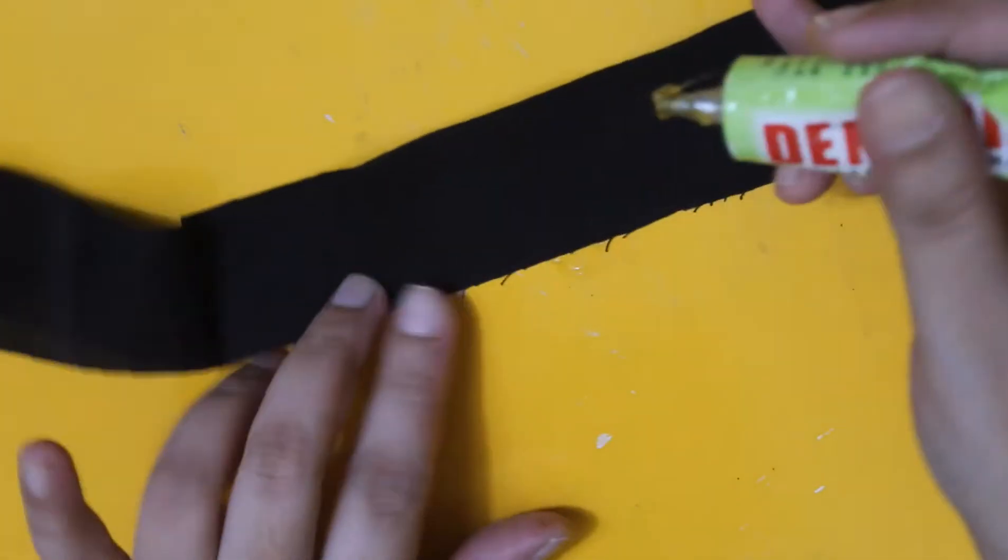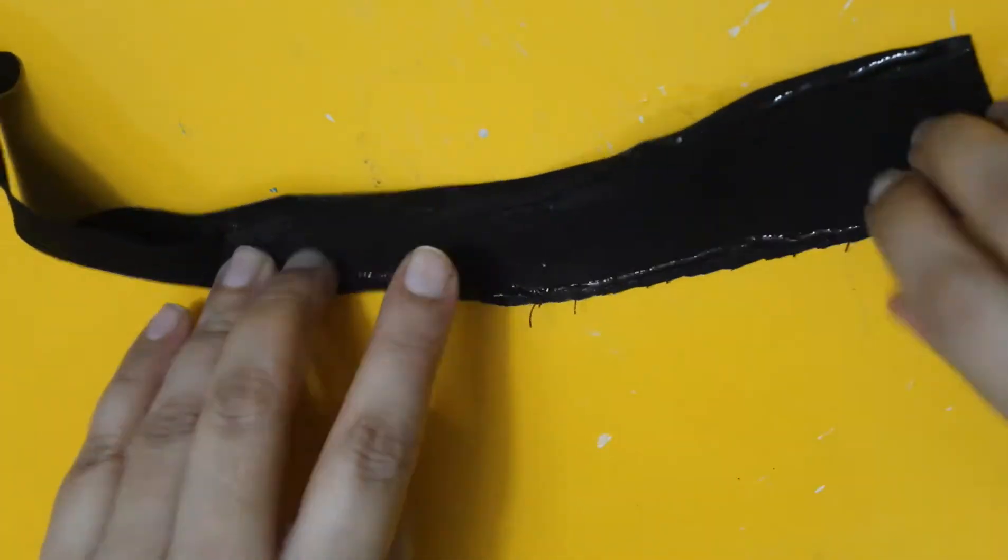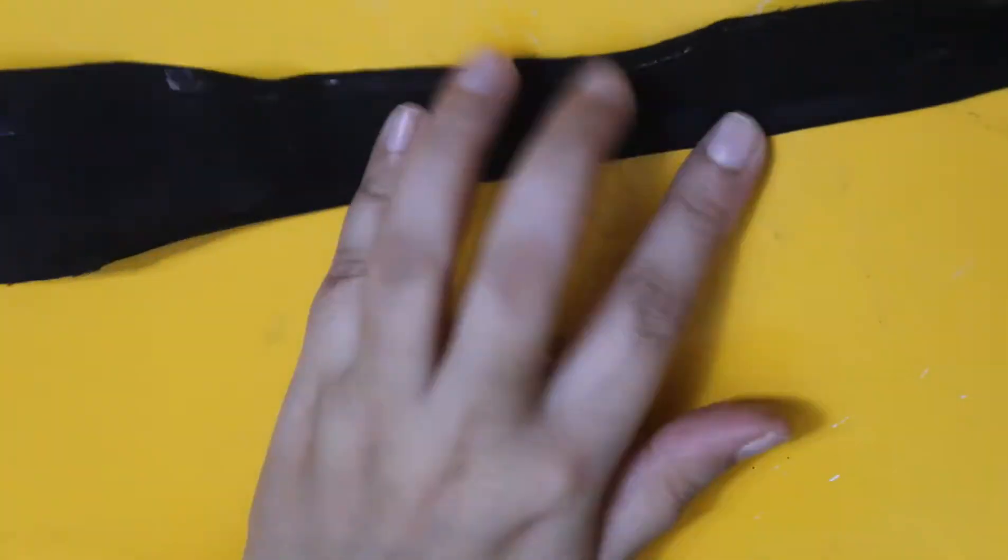I am going to cut a ribbon-like shape from this cotton fabric. Now I am applying Dendrite to both sides of the fabric and sticking it to prevent threads from coming out from the loose ends. Fabric glue would have been the best choice, but since I don't have fabric glue I am using Dendrite.